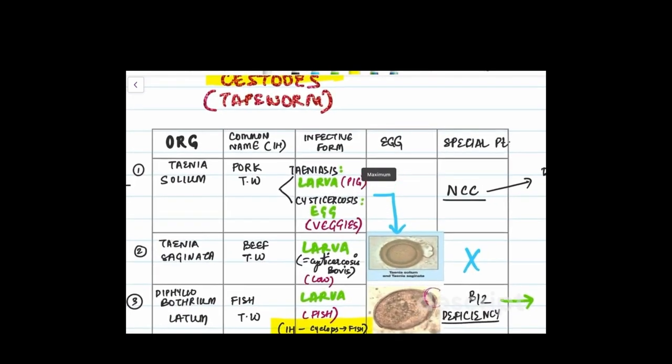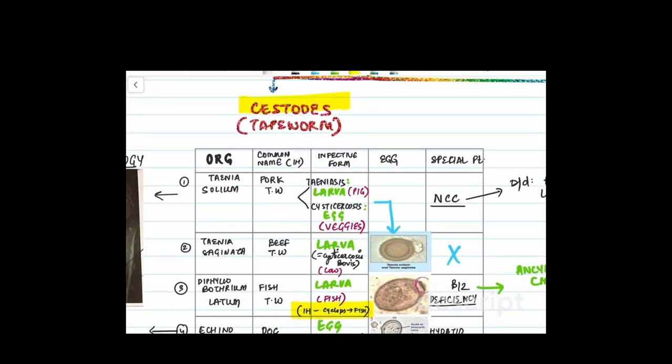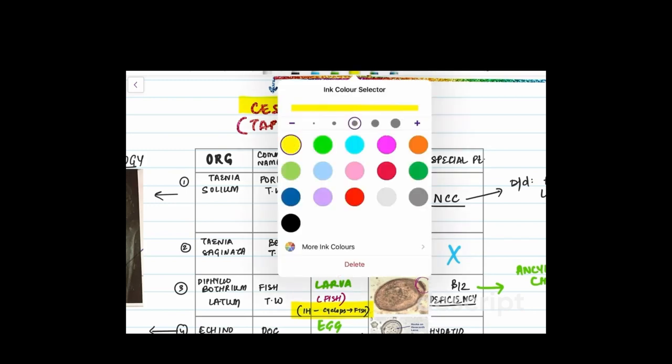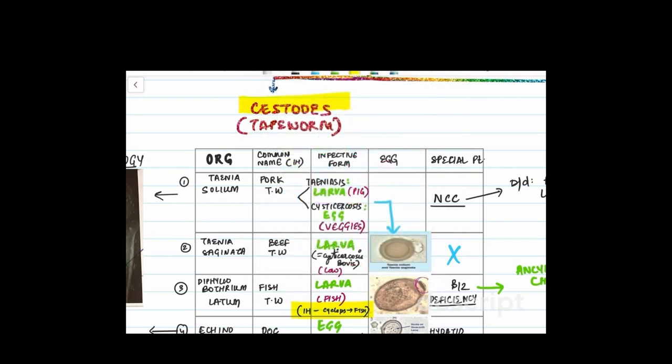First, very importantly, we have Taenia solium, the pork tapeworm, and we need to know both the diseases it causes. First is tiniasis which is an intestinal disease, and the second is cysticercosis which can most commonly go to the brain. When cysticercosis goes to the brain it is called neurocysticercosis. In tiniasis, the infective form is larva which is in the pig muscle. In cysticercosis, the infective form is egg and we ingest the undercooked veggies from which we can get the infection.